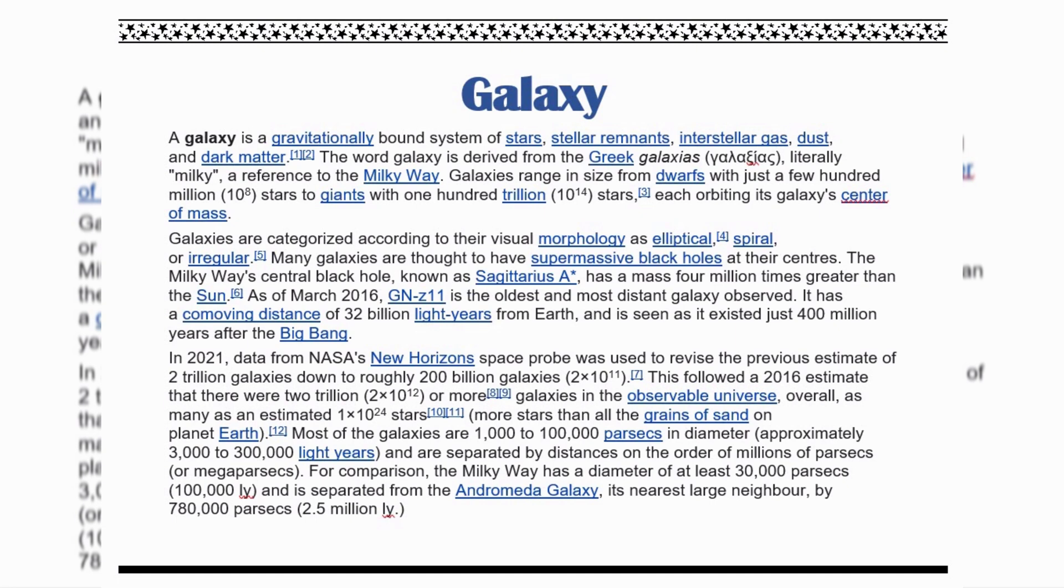The Milky Way has a diameter of at least 30,000 parsecs, 100,000 light years, and is separated from Andromeda galaxy, its nearest large neighbor, by 780,000 parsecs, 2.5 million light years.